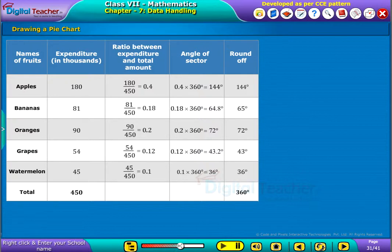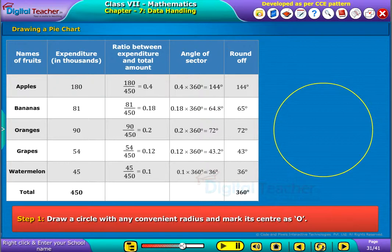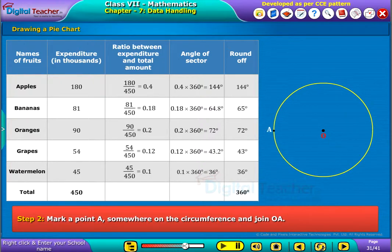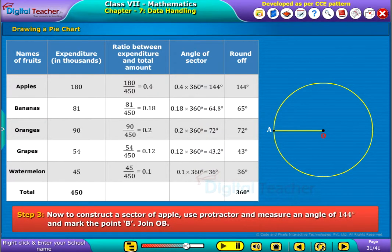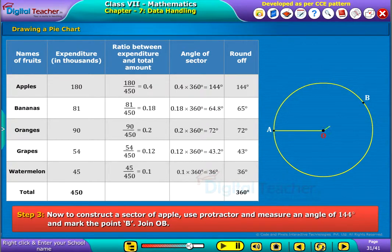The steps to construct the pie chart are as follows. Step 1: Draw a circle with any convenient radius and mark its center as O. Step 2: Mark a point A somewhere on the circumference and join OA. Step 3: To construct a sector for apples, use a protractor and measure an angle of 144 degrees, then mark the point B and join OB.